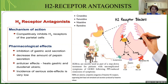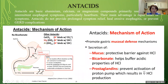H2 blockers are selective competitive antagonists of the H2 receptor, suppressing basal and stimulated acid secretion. The drugs in this class include cimetidine, famotidine — the most commonly used — nizatidine, and ranitidine. It should be noted that ranitidine can influence male sexuality, so famotidine is the better choice. Antacids are the third line of drugs used in GERD treatment and are mostly symptomatic. They are basic aluminum, calcium, or magnesium compounds primarily used to manage intermittent esophageal symptoms, particularly heartburn. Their main advantage is rapid relief of symptoms.